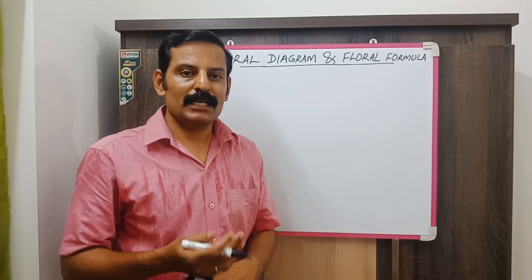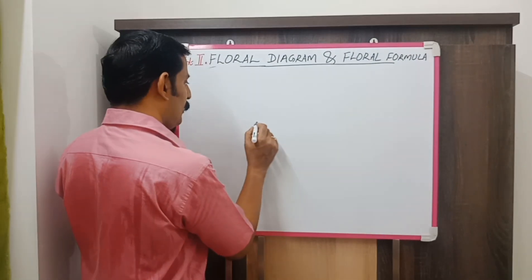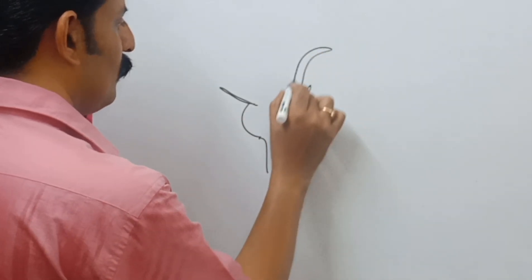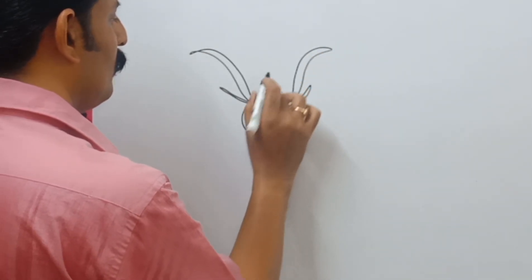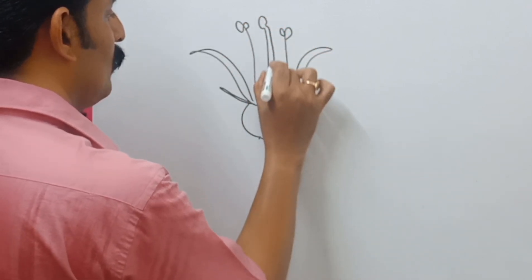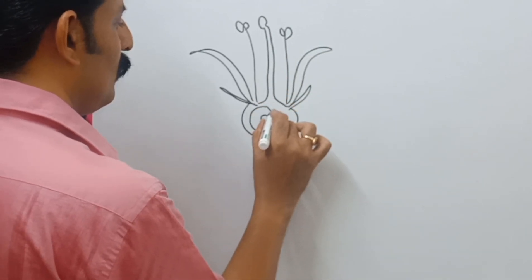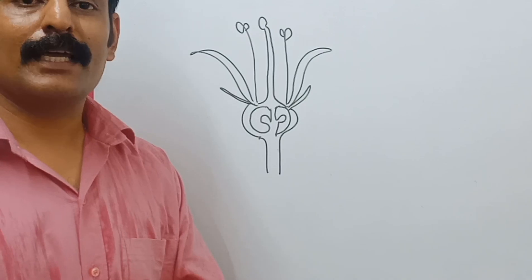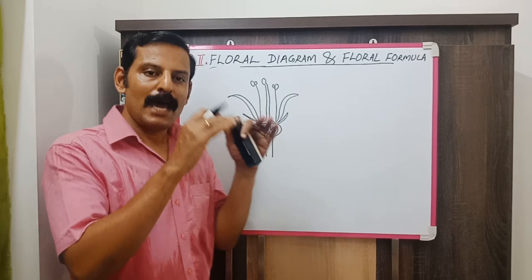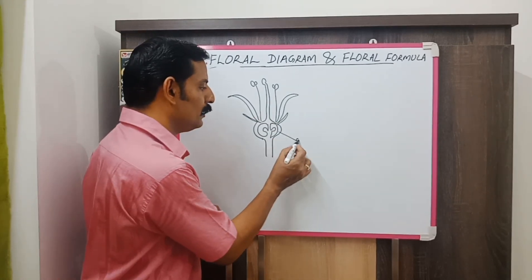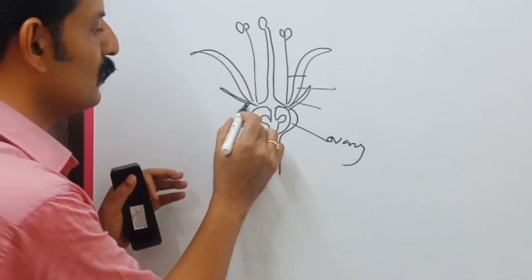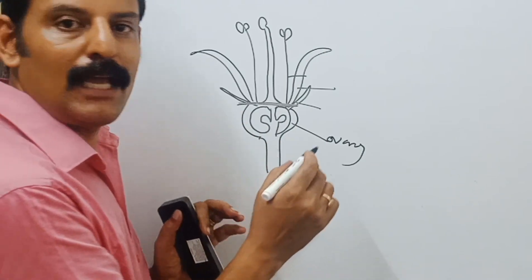In an epigynous flower, all the floral organs arise from the top of the ovary, and the ovary is in the inferior position. All the other floral organs like sepal, petal, and androecium arise from the top of the ovary. This condition is known as epigynous.